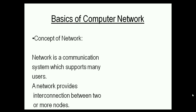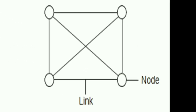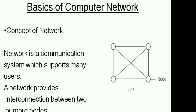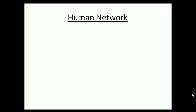Network provides the interconnection between two nodes. Here, a node means anything that wishes to communicate. This diagram illustrates the networking concept where four nodes are connected to each other with the help of links, forming a system called a network.